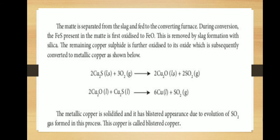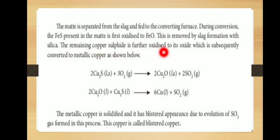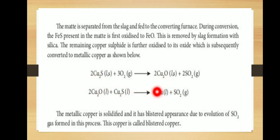The matte is separated from the slag and fed to the converting furnace. During conversion, the FeS present in the matte is first oxidized to FeO, which is removed by slag formation with silica. The remaining copper sulfide is further oxidized to its oxide, which is subsequently converted to metallic copper. The metallic copper solidifies with a blistered appearance due to the evolution of sulfur dioxide formed in the process — this copper is called blister copper.